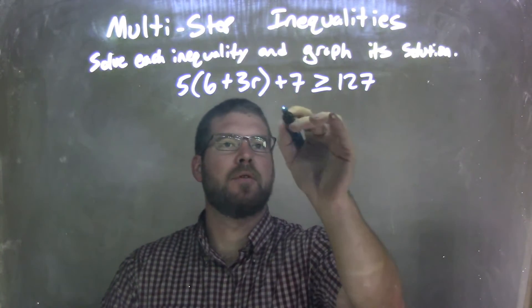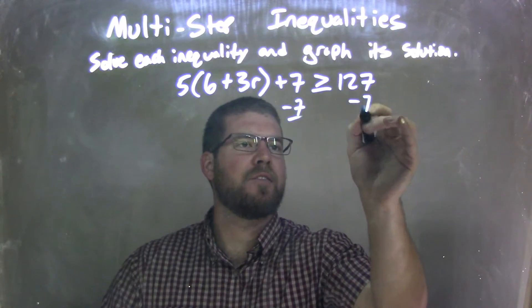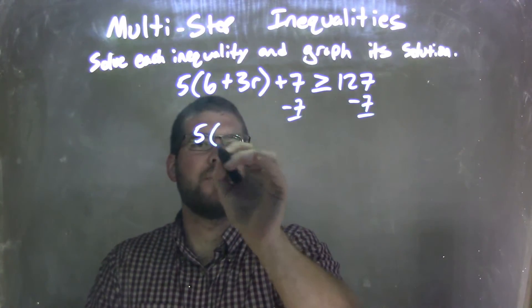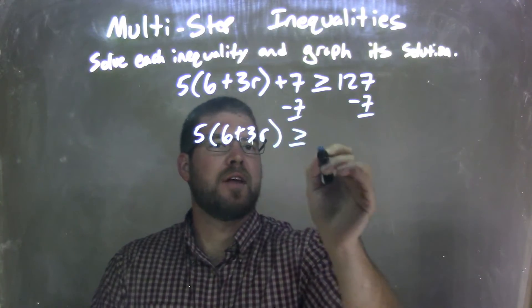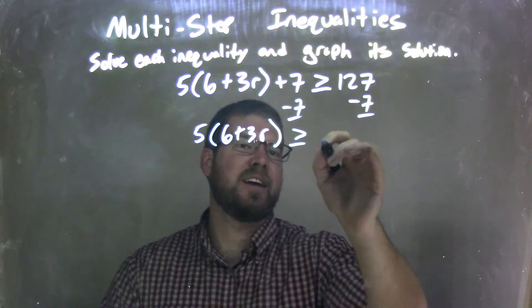Well, my first step, I'm going to subtract 7 on both sides. Subtracting 7 on both sides leaves me with 5 times parenthesis 6 plus 3R is greater than or equal to 127 minus 7, being 120.